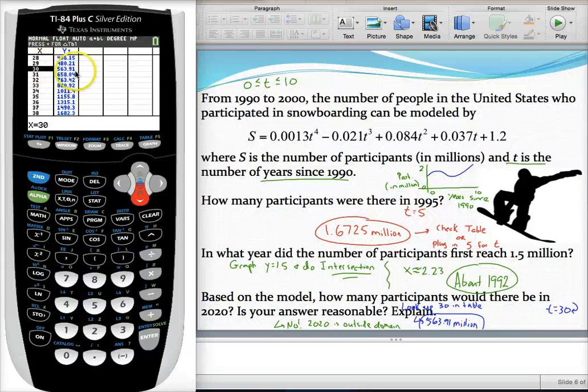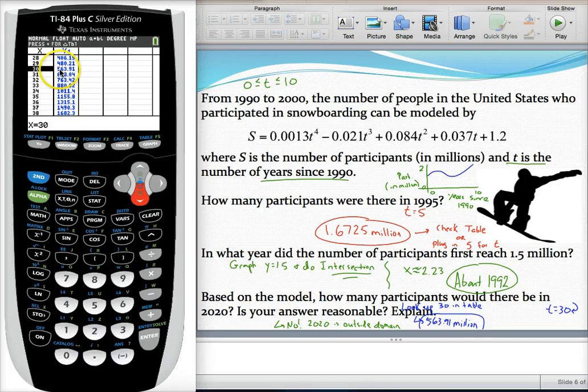All right, there we go. I got my table fixer. So when x was 30, there's my output of my very unreasonable 563 million snowboarders.